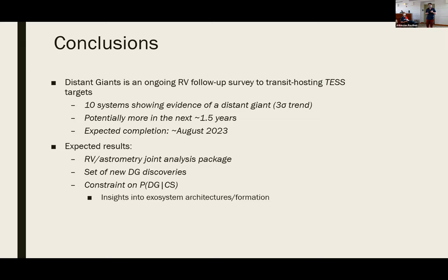To bring us back around: the Distant Giants survey is an ongoing follow-up to transit-hosting TESS targets. We've already detected evidence of 10 distant giants in these systems through three-sigma trends, and we'll potentially see more throughout the rest of the survey until it ends around 2023. Expected results include a continually developing joint RV and astrometry analysis package, and the fundamental result of the survey — the constraint on the probability of finding a distant giant in a system with a close-in small planet. Although a simple calculation at the end, this value will give us insights into the history of our own solar system and the formation processes and dynamics of the broader population of exosystems.